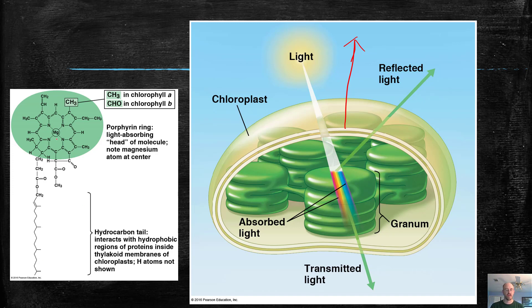Chlorophyll has a structure with magnesium in the middle here, and this area right here is either CH3 if you're talking about chlorophyll A, or CHO in chlorophyll B. They will absorb slightly different wavelengths of light, but they absorb most of the other wavelengths other than green.